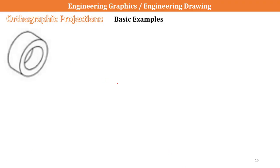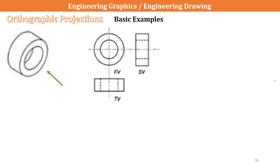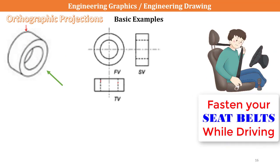This is a simple example which we can visualize from this particular view. Since I am seeing from the front view, I can see two concentric circles, which are going to be positioned like this. If I see from the top view, I can see a rectangle face, and the inner hole I cannot see — that's why I will represent the inner hole as a dotted line, which is basically termed as a hidden line.